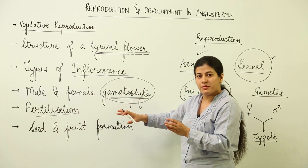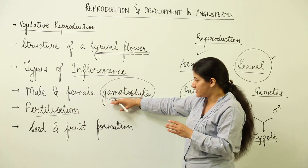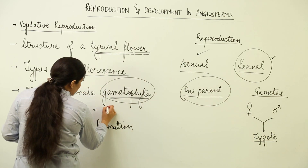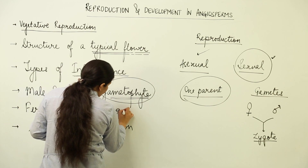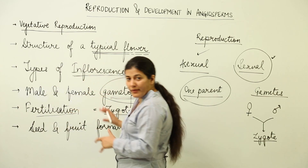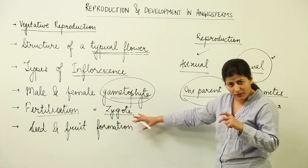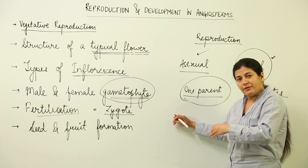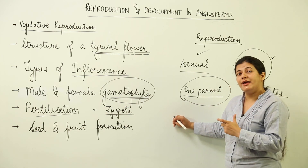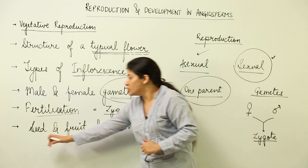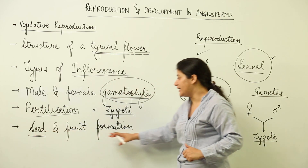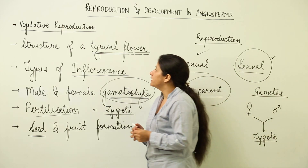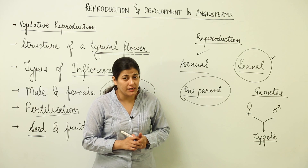After gametophytes, we will study the process of fertilization, where the male and female gametes formed within these gametophytes unite and give rise to a zygote. This zygote will later develop into an embryo. That embryo will give rise to a seed. So the last topic is seed and fruit formation. This is all we are going to study, and the next lessons will be dedicated to understanding each of these topics in detail.